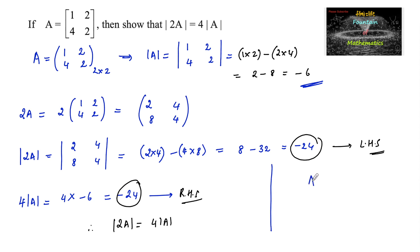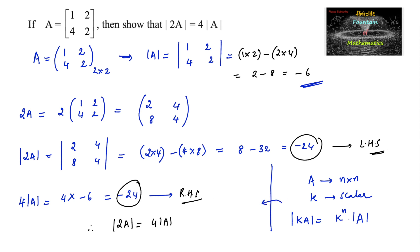We can also make a note: if A is a matrix whose order is n by n, and if K is some scalar quantity — some constant real number — then the determinant of KA can be taken as K to the power of the order of the matrix, that is K^n, into the determinant of A. Here A is a matrix of order 2 (n=2) and K is 2, so determinant of 2A equals 2^2 times det(A), which is 4 times det(A). By using this property we can also verify the answer.